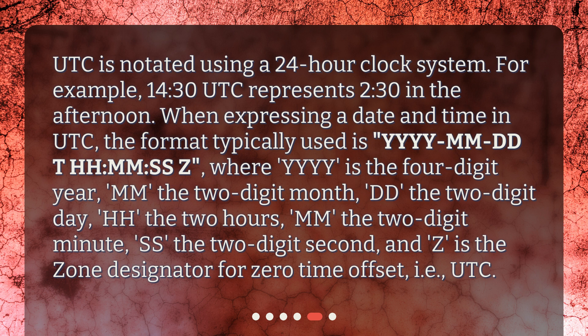where YYYY is the four-digit year, MM the two-digit month, DD the two-digit day, HH the two-digit hour, MM the two-digit minute, SS the two-digit second, and Z is the zone designator for zero-time offset, i.e., UTC.